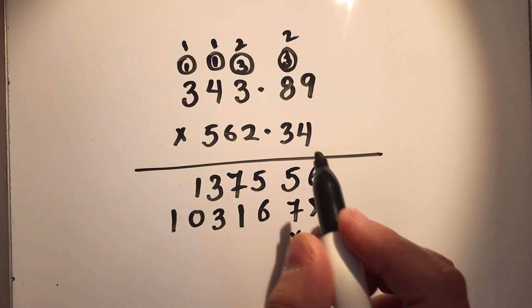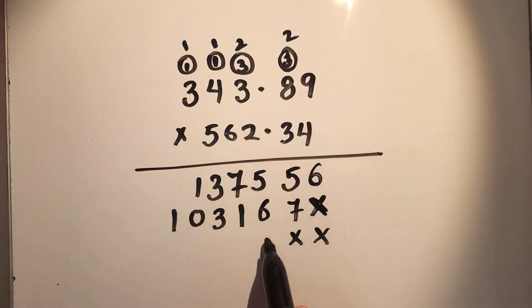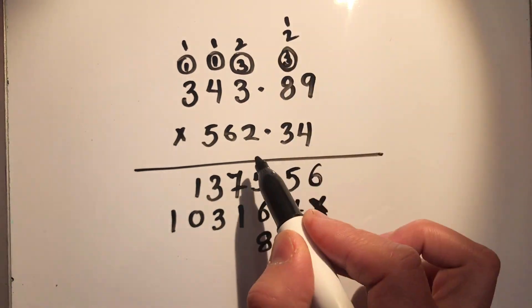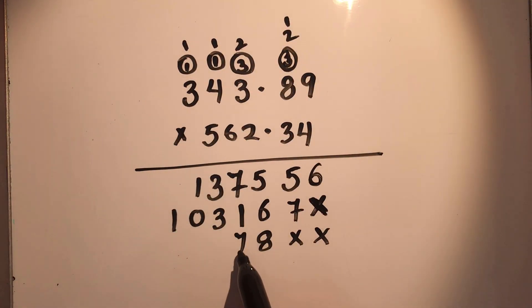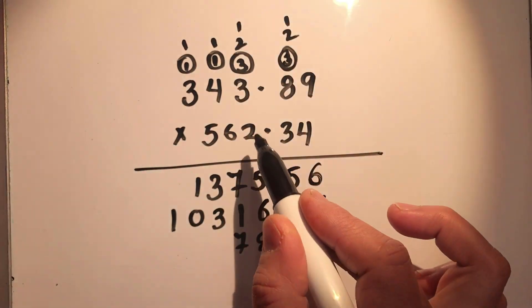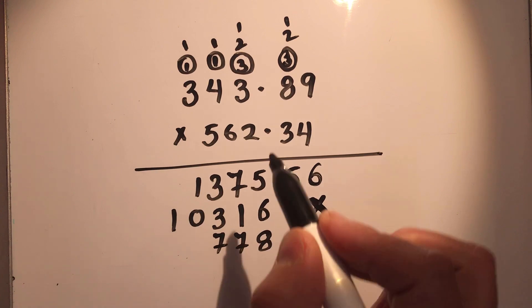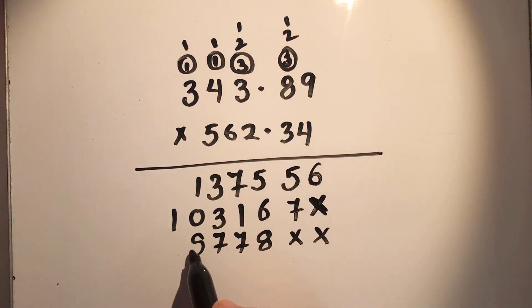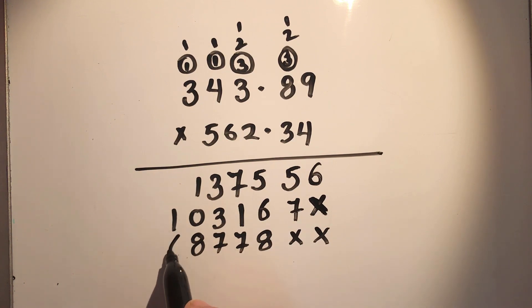Now we move on to the next place, which is 2. So 2 times 9 is 18, 1 carry over. 2 times 8 is 16 plus 1 is 17, 1 carry over. 2 times 3 is 6 plus 1 is 7. 2 times 4 is 8, and 2 times 3 is 6.